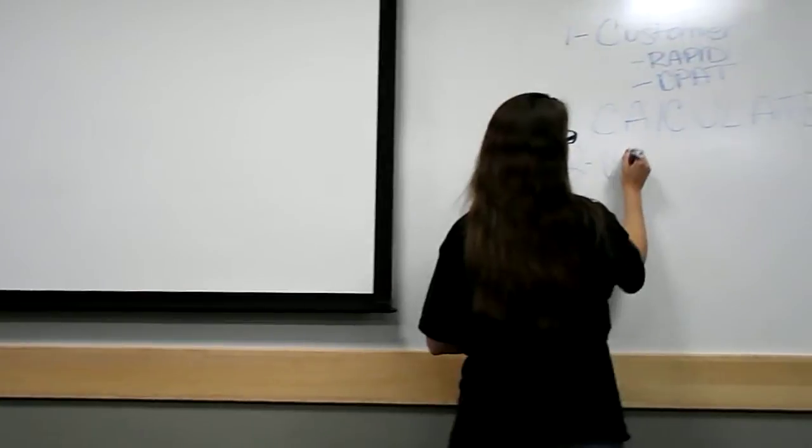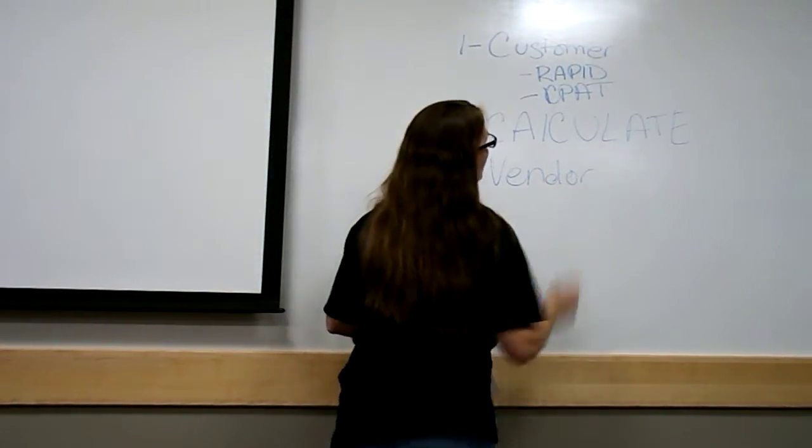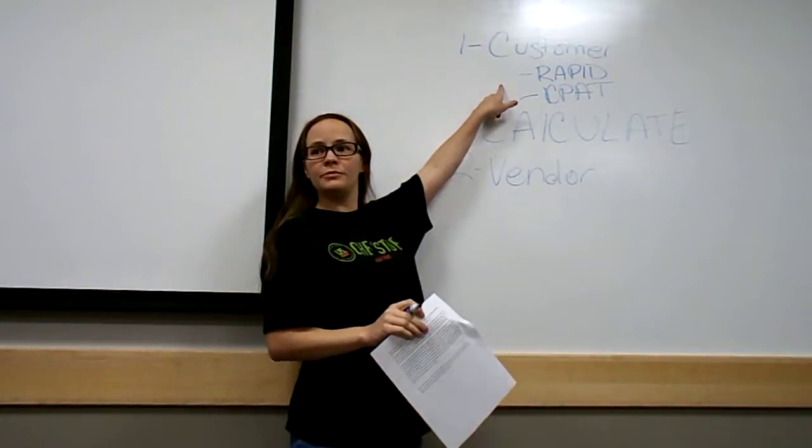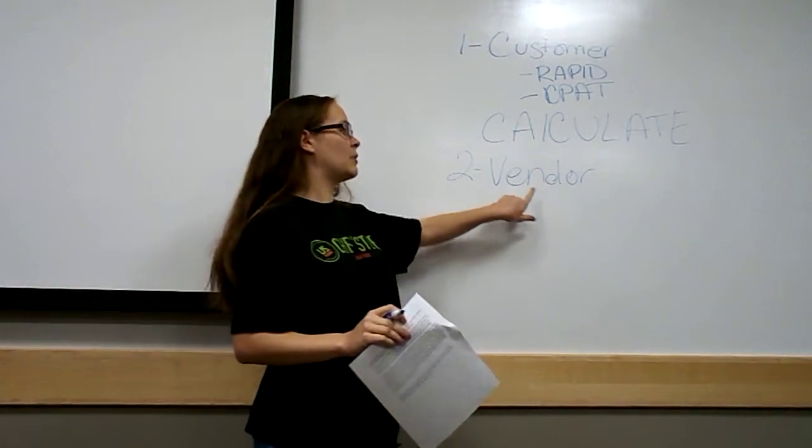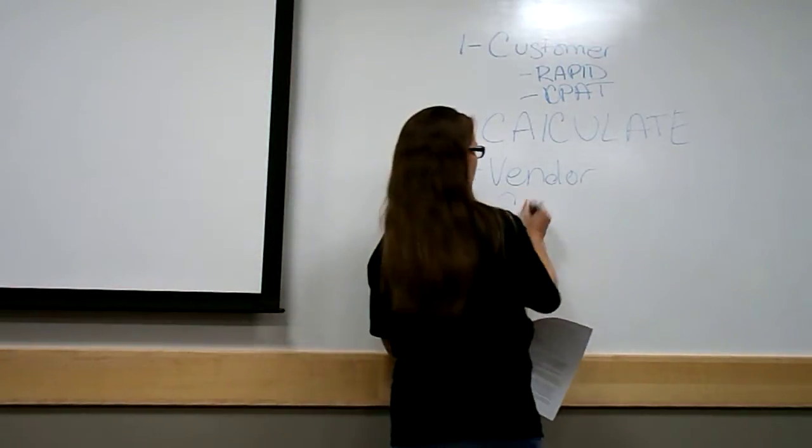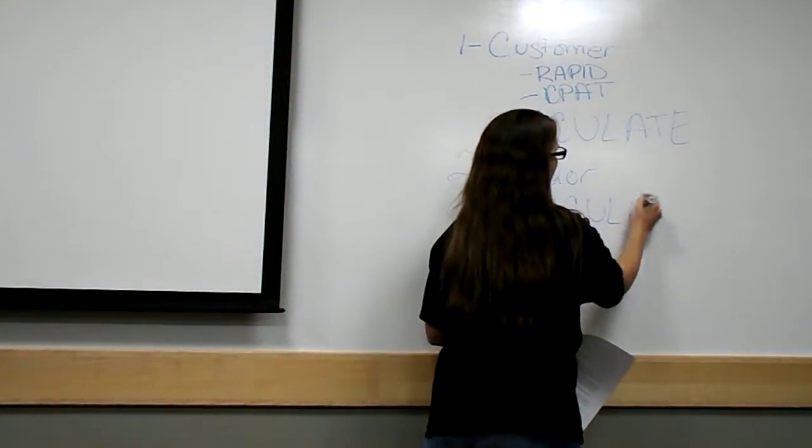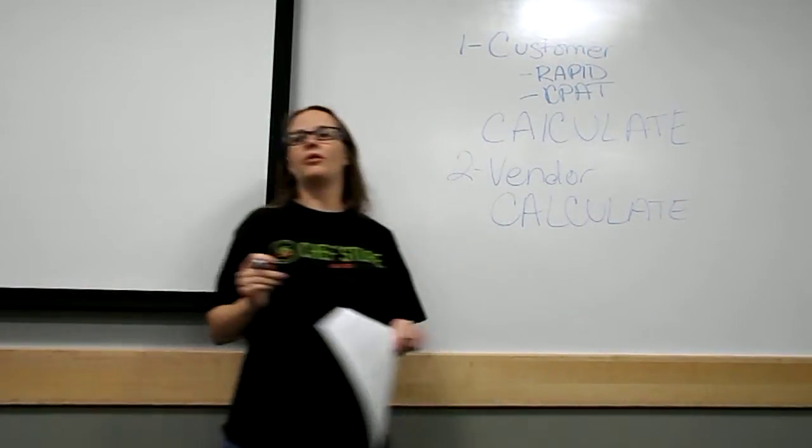Now we move to the vendor side. The rapid audit and CPAT have already been done and set up, so we calculate. On the vendor side, there are many variables. It could be an agency fee, which has nothing to do with what we were charged or charged the customer. There's deviated cost, where we take the invoice price, our purchase order cost,